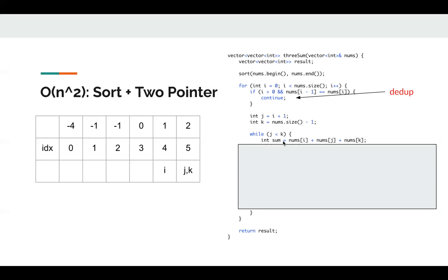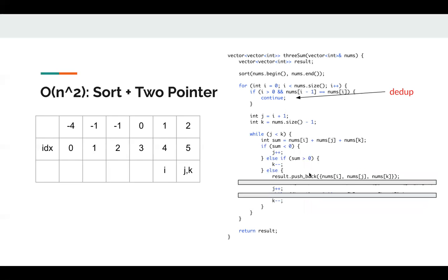First we get the sum. Then we check. If sum is smaller than zero, we move j in order to make sum bigger. Otherwise, if sum is greater than zero, we move k. Otherwise, we find a valid triplet. We just put it into our result. Then we move j and k.